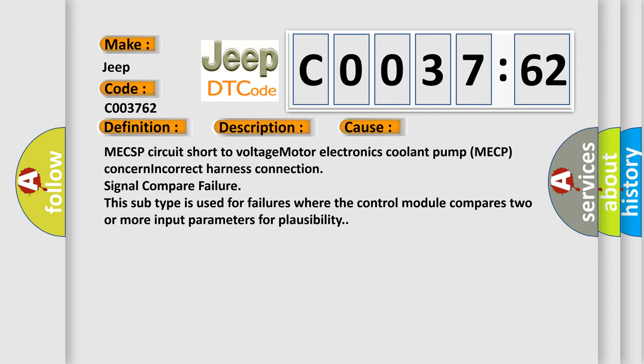MECSP circuit short to voltage, motor electronics coolant pump MECP concern, incorrect harness connection, signal compare failure. This subtype is used for failures where the control module compares two or more input parameters for plausibility.